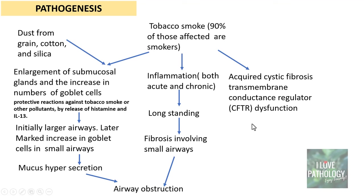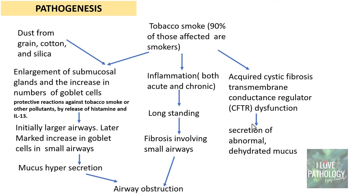CFTR is a transmembrane regulator that regulates the movement of ions across epithelial cells. One of its most important functions is regulating the secretion of mucus from epithelial cells — helping in the production of mucus with proper consistency and proper hydration. When there is dysfunction of CFTR, the mucus produced is not well hydrated; it is dehydrated. CFTR dysfunction therefore results in secretion of abnormal dehydrated mucus, and because the mucus is dehydrated it does not result in proper mucociliary clearance.